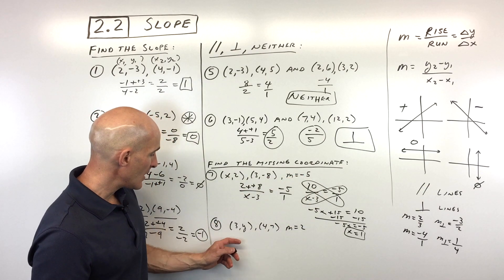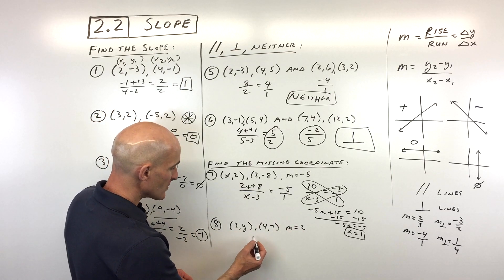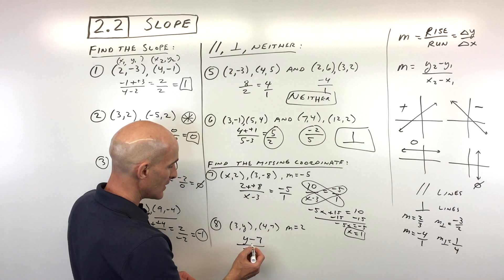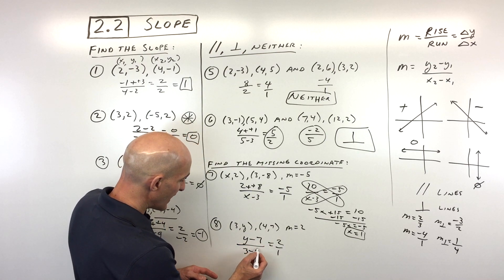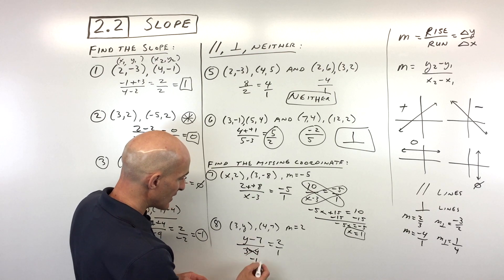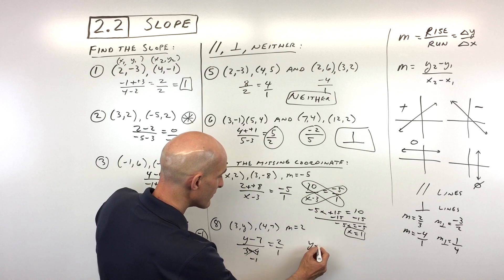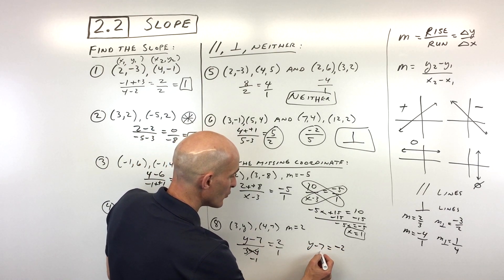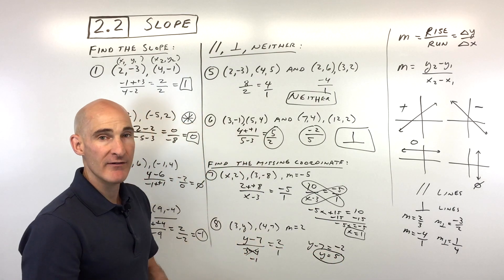Okay, last problem here, number 8, we've got these two points. We want it to equal a slope of 2. So I'm going to do the same process. Y minus y over x minus x. Okay, and that equals 2, which we know is 2 over 1. Now, 3 minus 4 is just a -1. So I'm just going to reduce this right here, -1. I'm going to cross multiply. So y minus 7 times 1 is just y minus 7. And 2 times -1 is -2. If I add 7 to both sides, you can see that's going to come out to y is equal to 5. And we've got it. So that's our y value. Again, you can check by putting it back in and doing your slope formula.